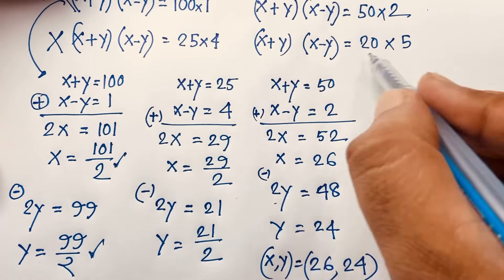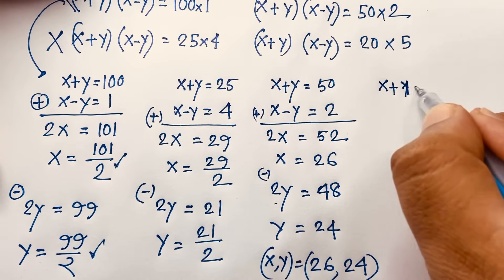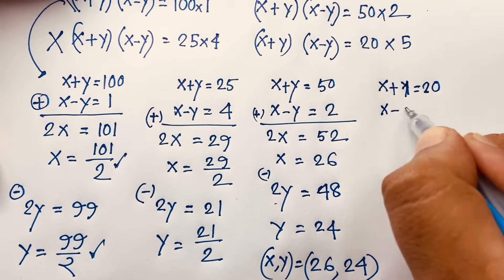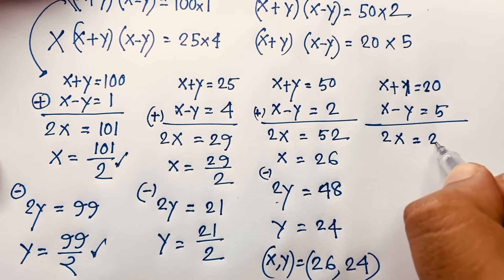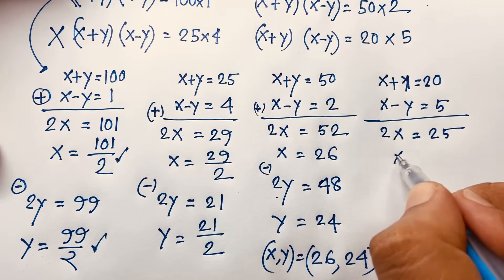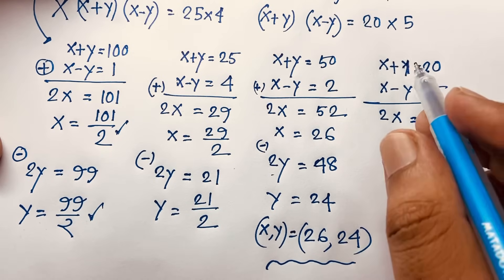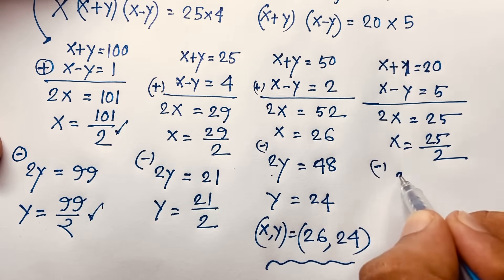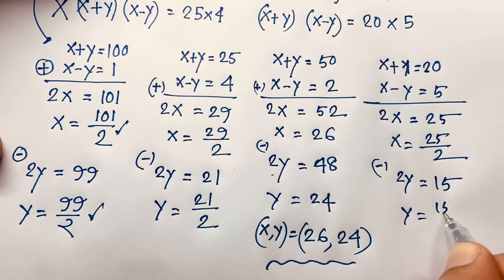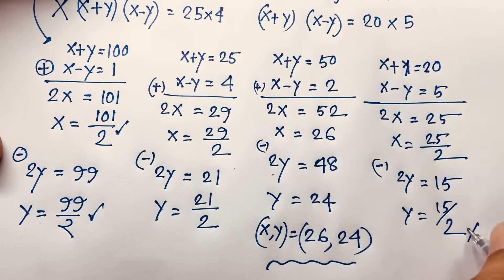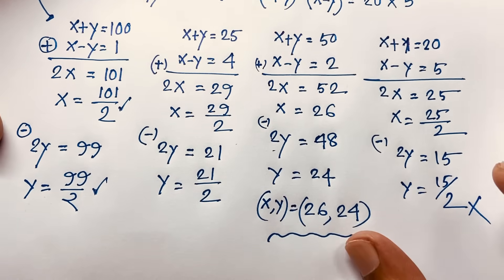For Case 4: x plus y = 20 and x minus y = 5. Adding gives 2x = 25, so x = 25/2. Subtracting gives 2y = 15, so y = 15/2. Both are fractions, so Case 4 is not possible. Our only valid answer is x = 26 and y = 24.